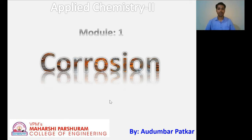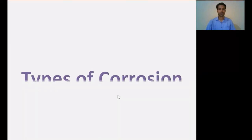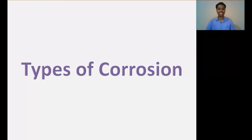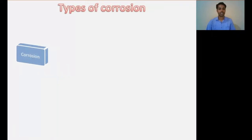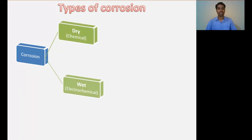Hello, I am Audhomar Parkar and welcome to this lecture on the module corrosion. In this lecture we are going to talk about different types of corrosion. Corrosion can be classified into two main types: dry, also called chemical corrosion, and wet, also called electrochemical corrosion.